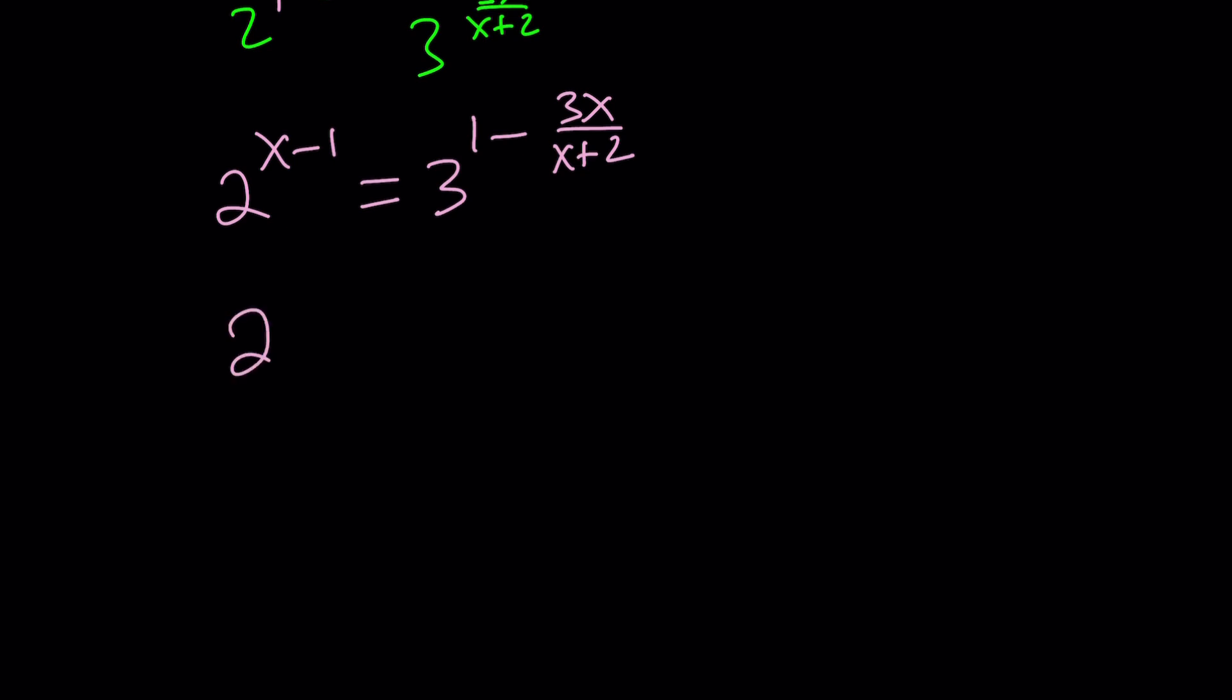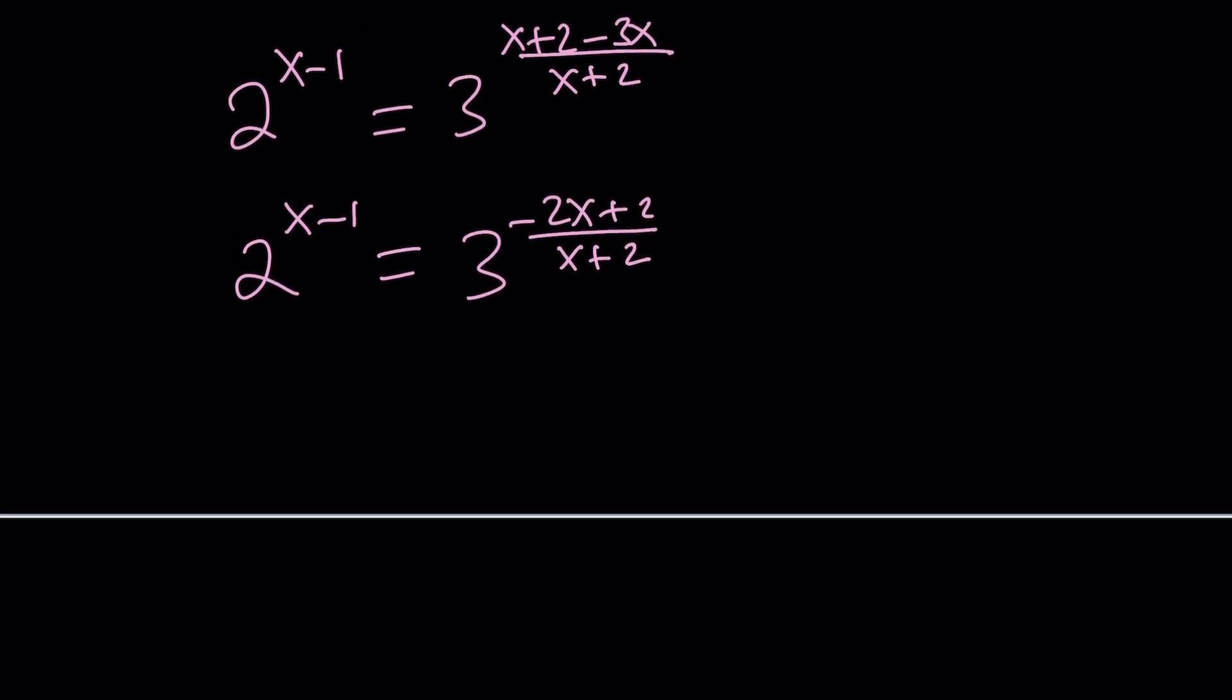On the right-hand side, make a common denominator. That will be (x+2)/(x+2), so minus 3x/(x+2). And if you write in the simplest form, it's going to be 3^((x+2-3x)/(x+2)) which is 3^((-2x+2)/(x+2)). At this point, you may not see what is going on. That's perfectly fine. But here's what I would like you to do. Factor the numerator.